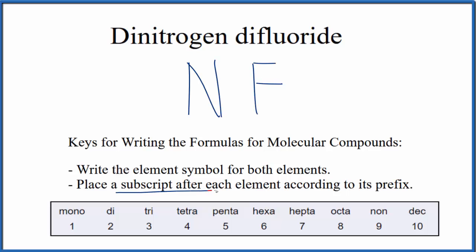Next, we're going to put a subscript after each element according to its prefix. For dinitrogen, we look at di, that's two. So we'll have N2, difluoride F2.